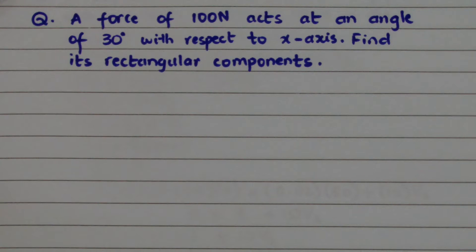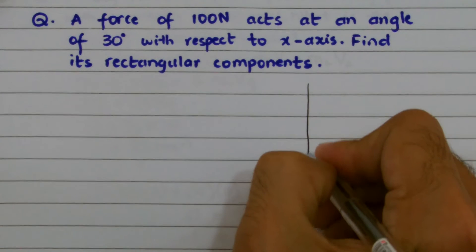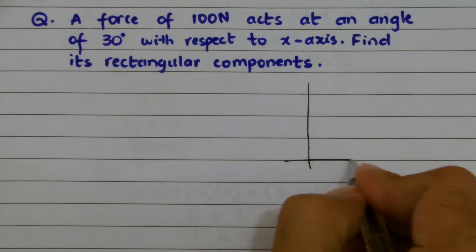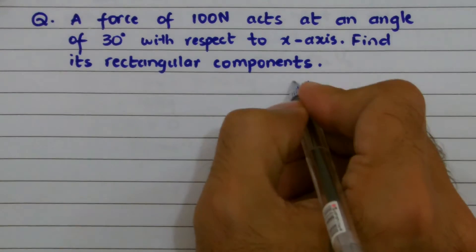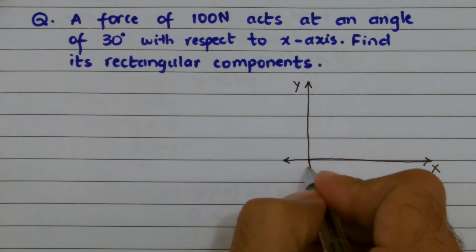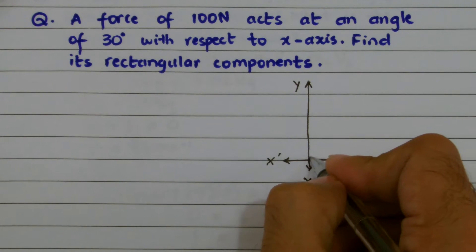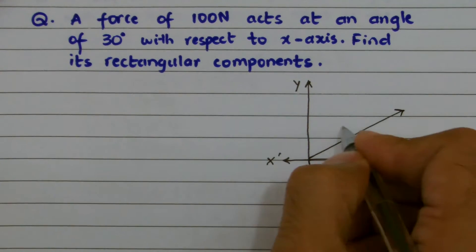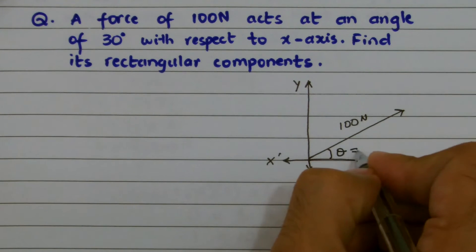This problem is based on the topic of resolution of vectors. Suppose if I'm given a vector in the xy-plane, let this be the x and y-axis, and I have that vector of 100 N making 30 degrees with respect to the x-axis.